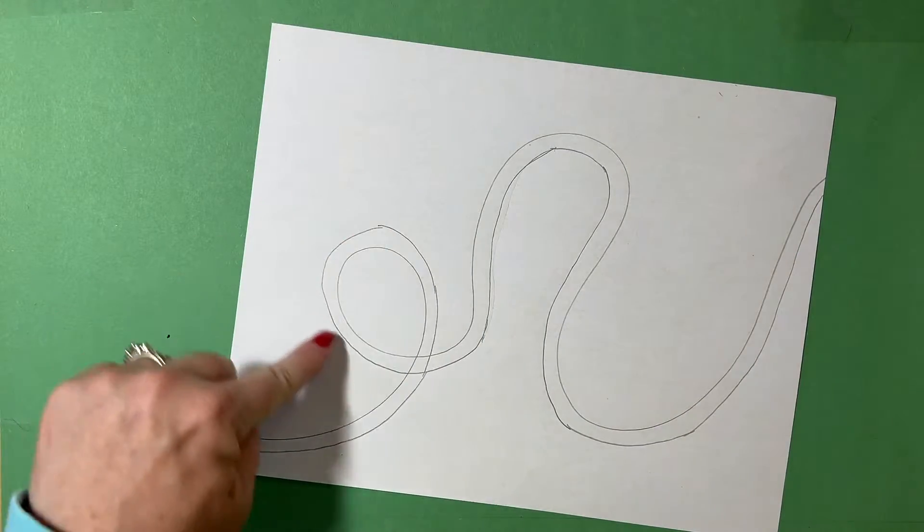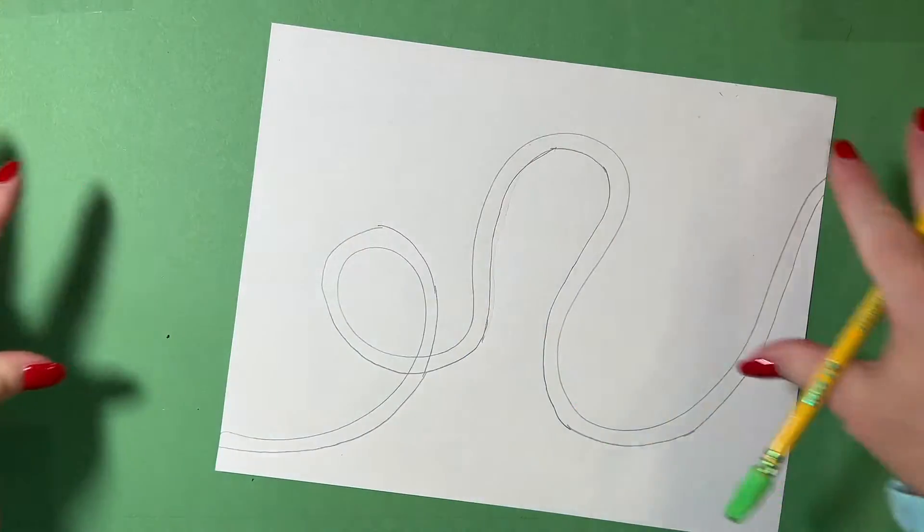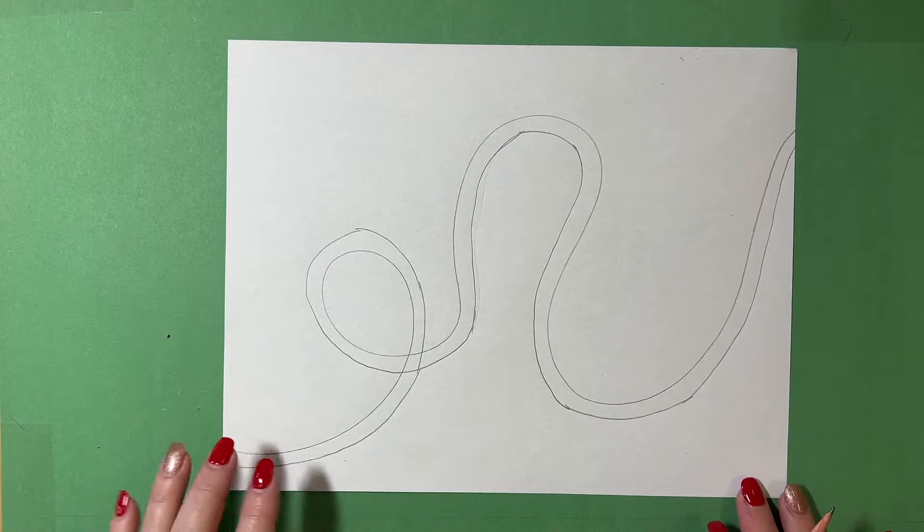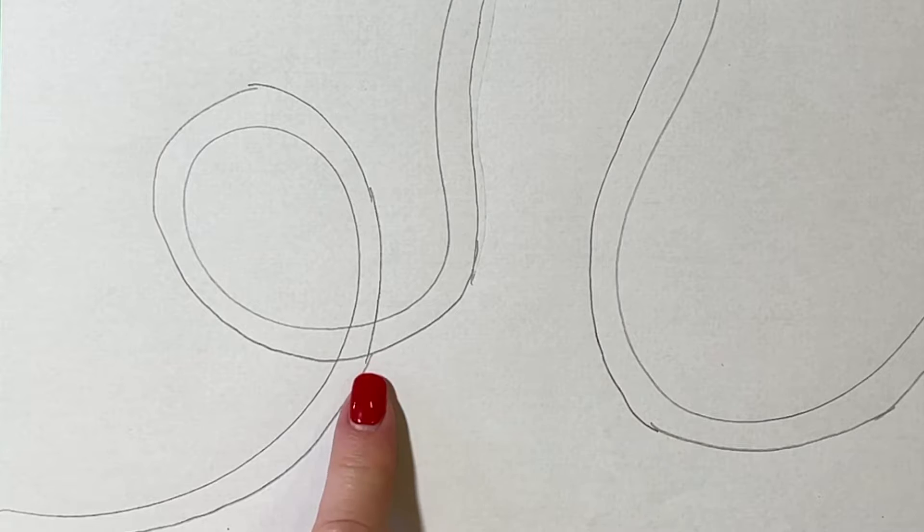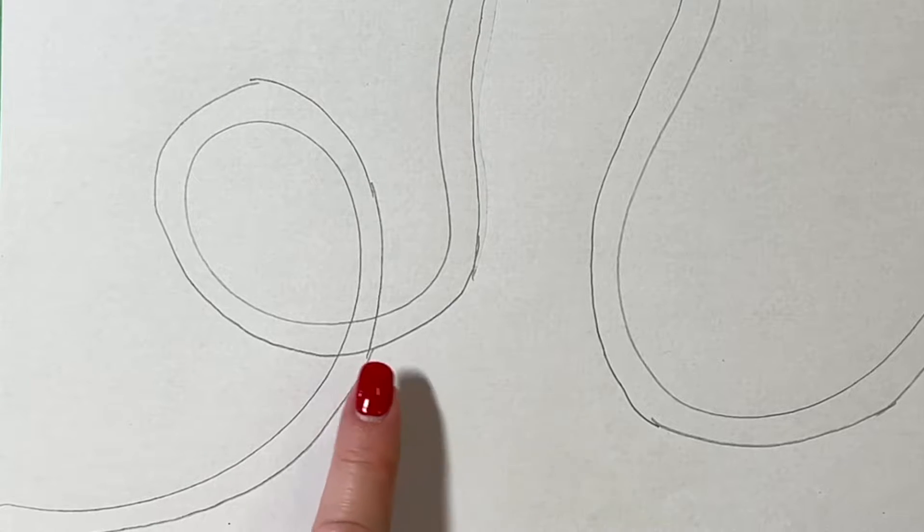So now I've got a parallel line curve going across my page, taking up most of my page. Right here, we've got to deal with our overlapping.